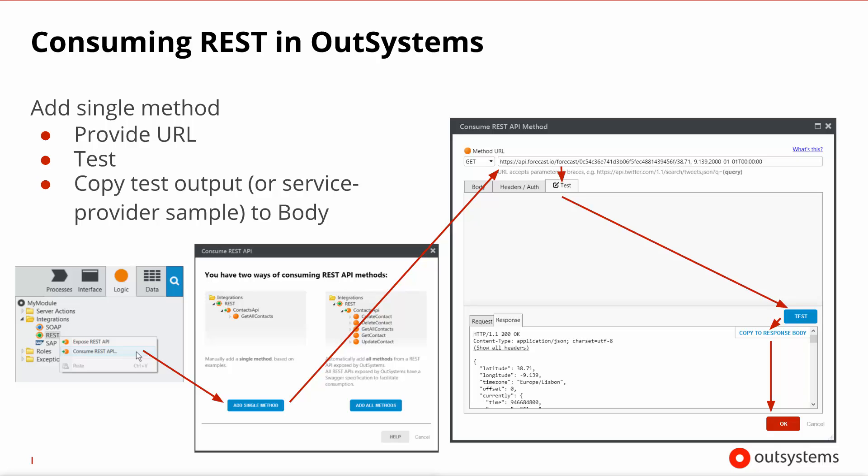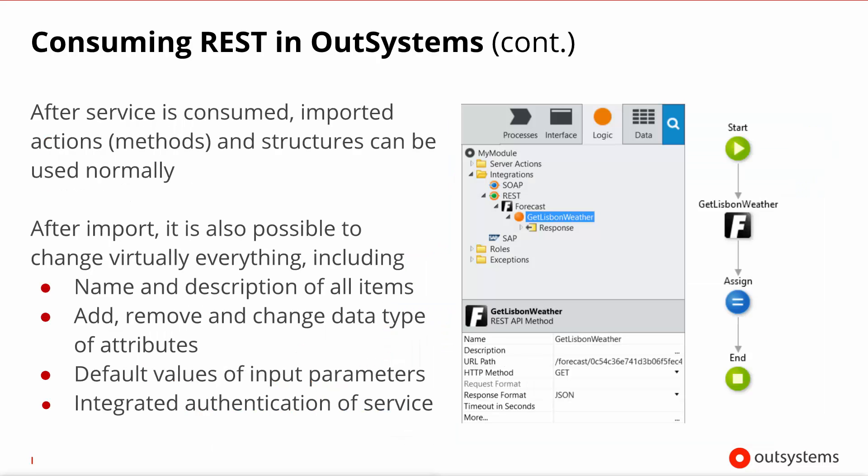If you have access to explicit documentation provided by the owners of the web service, it's better to use the sample body they provide in the documentation instead of the test result. Much like with SOAP, once the methods and structures exist you can freely use them in your module as you would use other actions and structures. Unlike SOAP, however, since the format of REST calls is very loose, it is actually possible to adjust a lot more things. For example, if you know there is an output parameter that the sample body doesn't show, you can right-click and add that output parameter. Likewise, you can change the types or add attributes to the structures that were introspected.